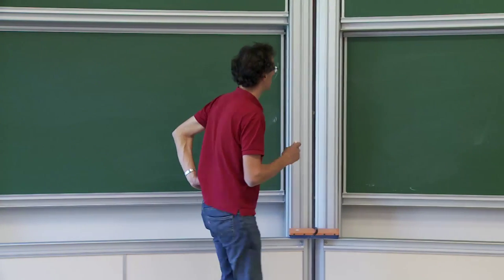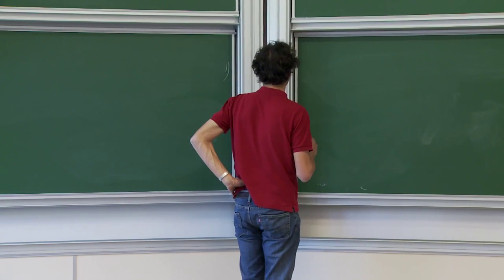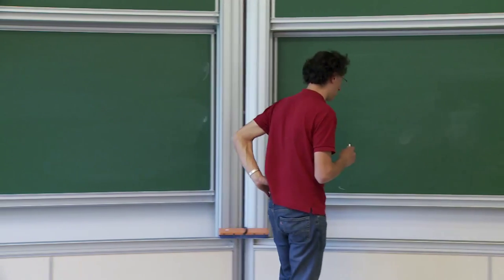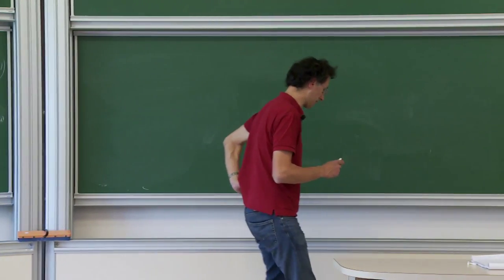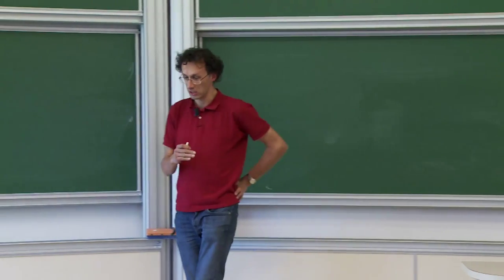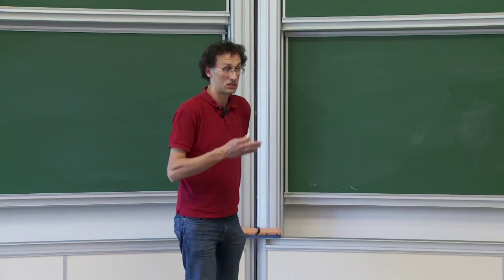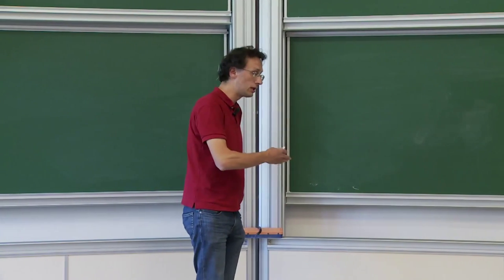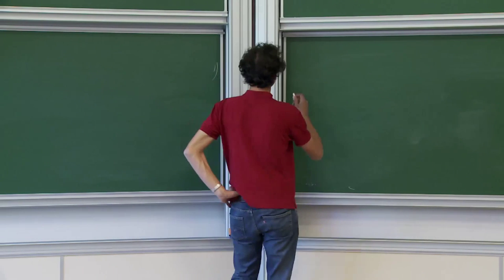On a appelé ça la dérive exponentielle. Je vais vous redire où on en est — ça sert à combler le trou. Donc, la dernière fois, j'ai énoncé une proposition, j'ai dit que je la montrerais aujourd'hui, et donc je vais la redonner.